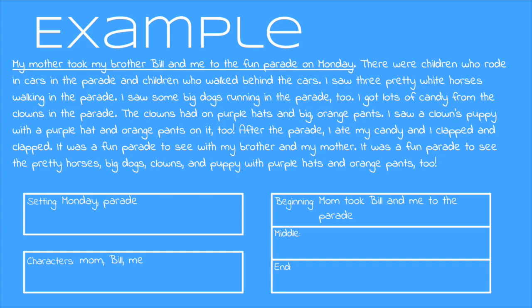As I keep reading I don't see any action until I get to the next detail: 'I got lots of candy from the clowns in the parade.' That's an action that I'm doing — I'm collecting the candy from the clowns — so I can include that in the middle: I got candy and I saw clowns. I keep going and I see one more event: 'I ate my candy and I clapped and clapped.' Those are actions that I'm doing, so I want to make sure to include them and add them as well.